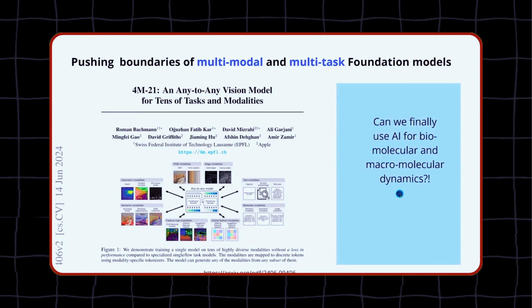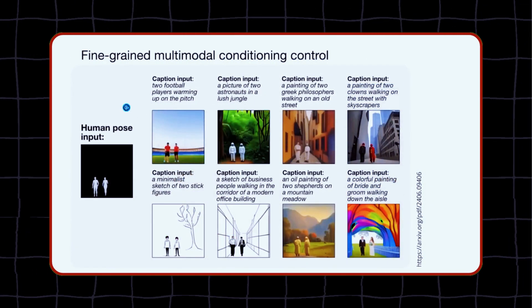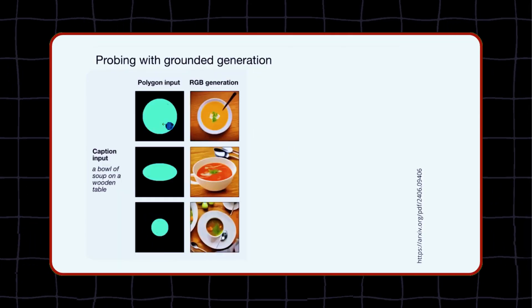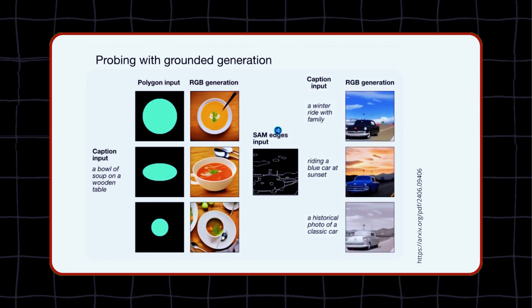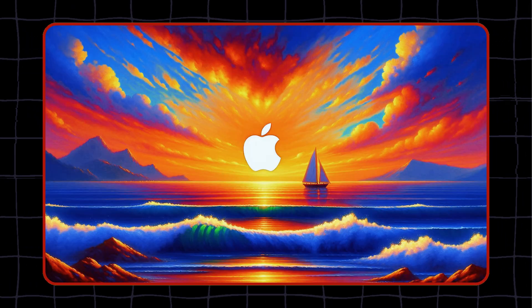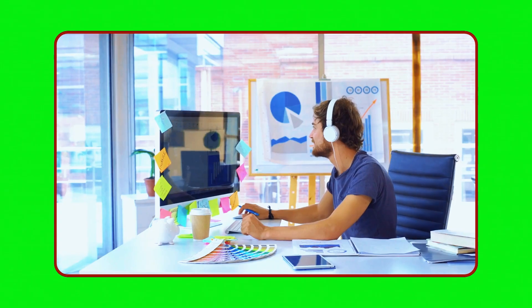But 4M can do all of these things, and more. It can combine and match different types of data, and create amazing outputs that you have never seen before. One of the coolest features of 4M is its ability to generate images from text descriptions. For example, if you type in a painting of a sunset over the ocean with a sailboat in the distance, 4M will generate an image of that scene. You don't need to be a graphic designer to generate amazing images — you just need 4M and your imagination.